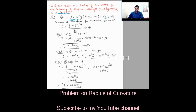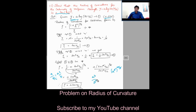Substituting equations 2 and 3 into equation star: rho = (1 + tan²(x/a))^(3/2) / (sec²(x/a)/a) = a · (sec²(x/a))^(3/2) / sec²(x/a). Using laws of indices, the powers simplify — sec²(x/a) raised to 3/2 divided by sec²(x/a) leaves sec(x/a). Therefore, rho = a·sec(x/a).